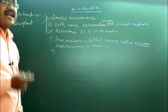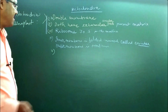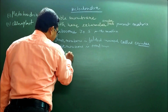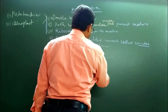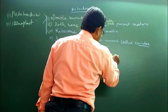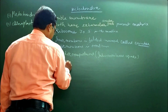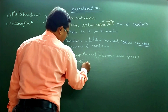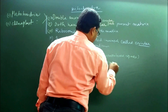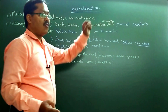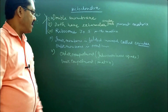These two membranes create two spaces. The outer compartment is the intermembrane space. The inner compartment is called the matrix. In the matrix, circular DNA as well as ribosomes and different enzymes are also present.